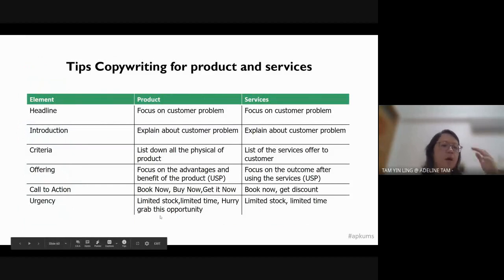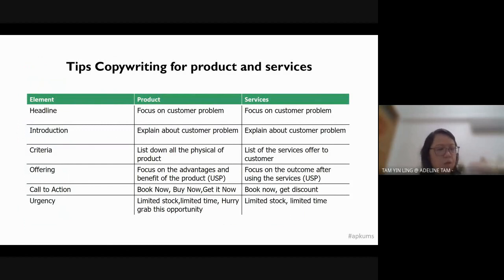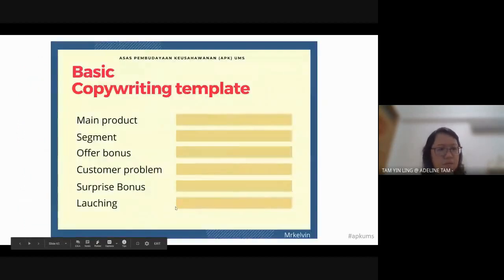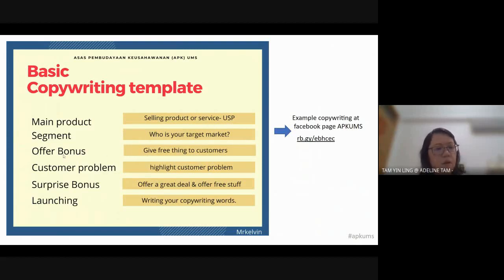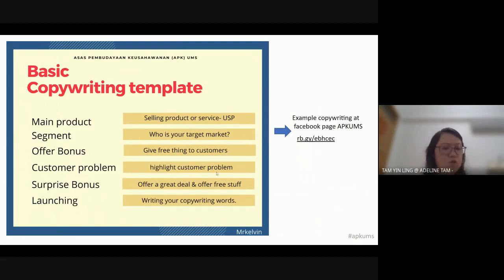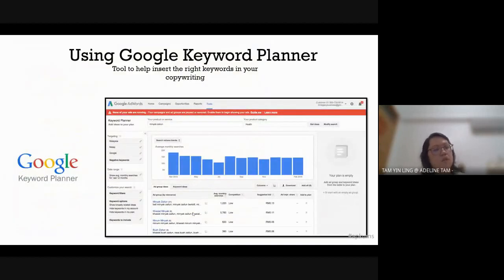Words must be appropriate and suitable for the product idea. If the product is high quality, you might use words like 'premium,' 'exclusive,' 'special,' or 'limited quantity only.' You can follow a copywriting format or template: identify your main product, your target market, your offer or bonus, what problems you can solve, and your deal or launch details.